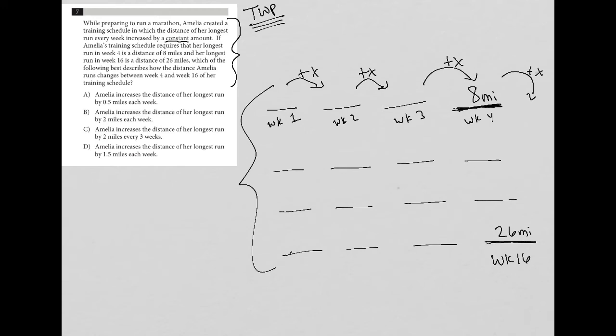Choice A says Amelia increases the distance of her longest run by 0.5 miles each week. Well, if that were the case, that means we'd have 8.5, 9, 9.5, 10, 10.5, 11, 11.5, 12. And you can already tell by that point we're not going to make it to 26 on just a 0.5 increase. So that cannot be correct, and that means choice A is out.